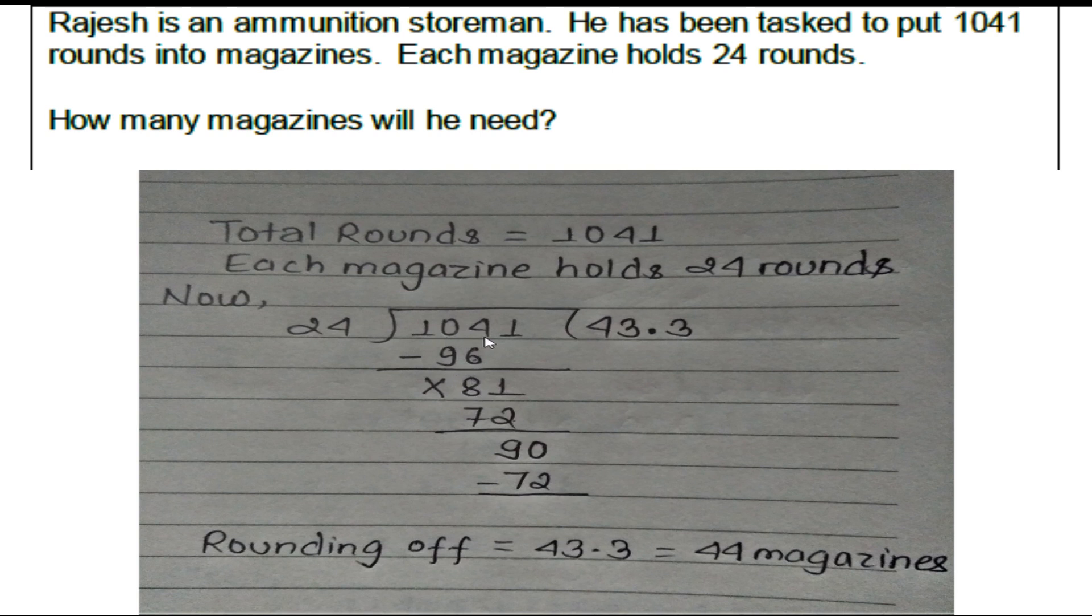We divide 1041 by 24, which gives us 43.3. But you cannot have 0.3 of a magazine. Since we need to round off, the answer is 44 magazines. In mathematics, when dealing with items like magazines and rounds that must be whole numbers, we round up. So the answer is 44 magazines.